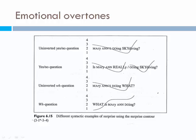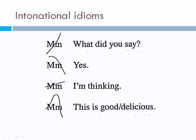Then we have intonational idioms — not even words, but these idioms convey something. For example, the 'mm' sound. The first one means 'What did you say?' — 'Mm?' The second means yes — 'Mm.' The third means 'I'm thinking' — 'Mm, mm.' And the last one means 'This is good, delicious' — 'Mm.' Even in idioms like this, you have different intonation patterns conveying different things.